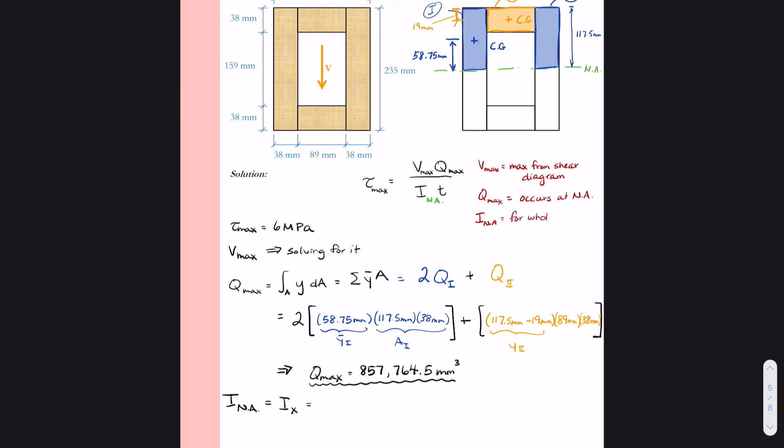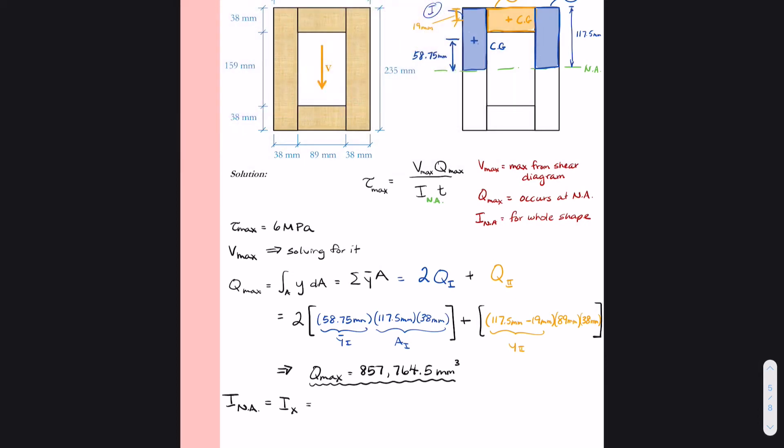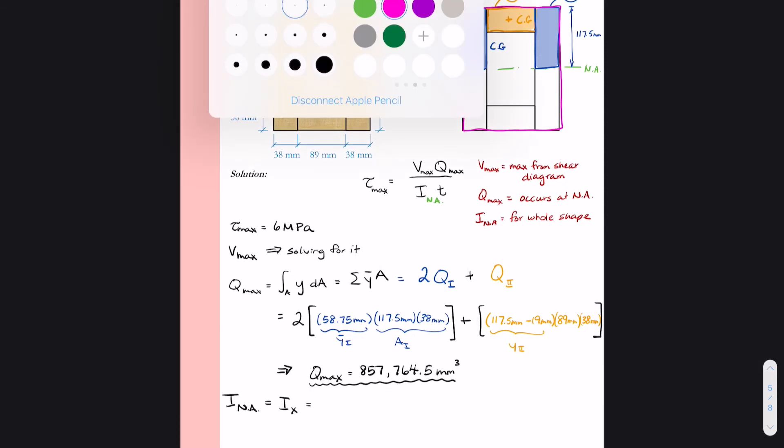So moment of inertia we know is 1/12 bh cubed for a rectangular shape. So if I look at the box beam, I have two rectangles. I have an outer rectangle that I outlined there in magenta.